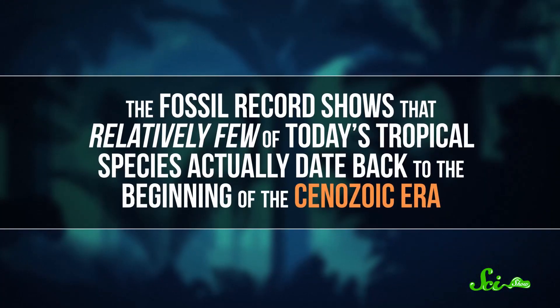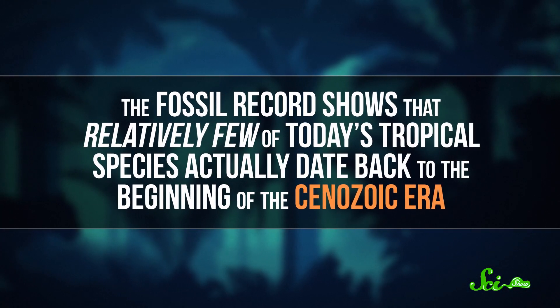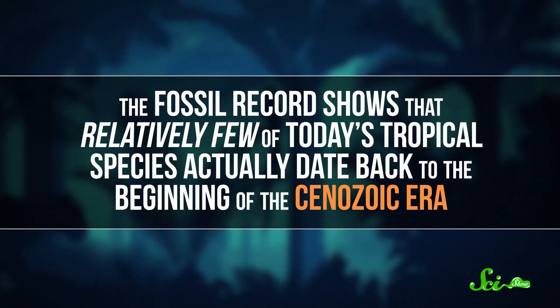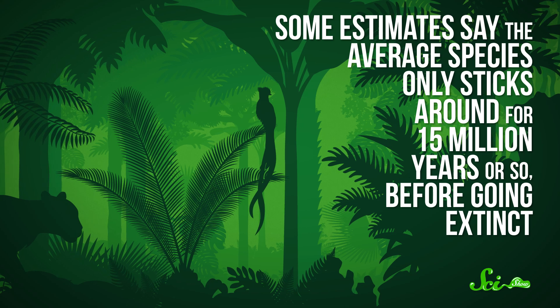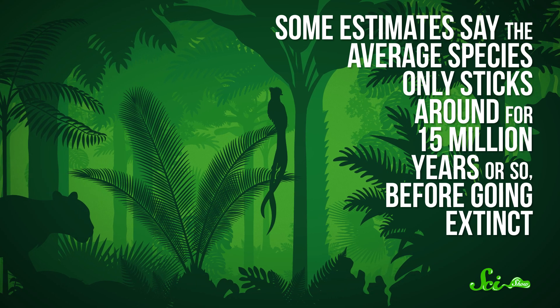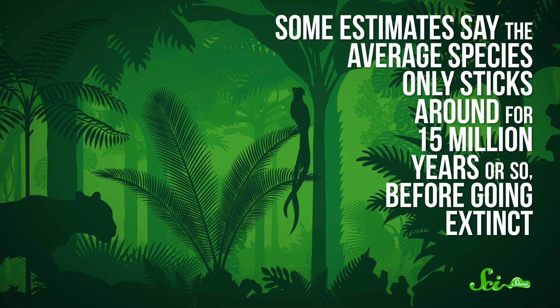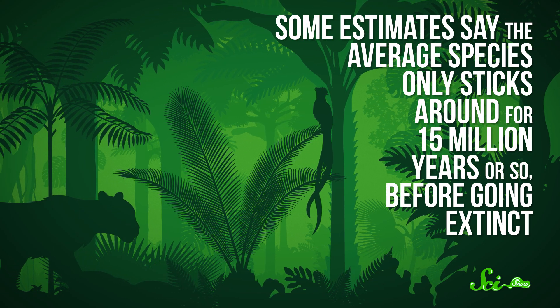But there are problems with this idea, too. For instance, the fossil record shows that relatively few of today's tropical species actually date back to the beginning of the Cenozoic era. Even in the tropics, some estimates say the average species only sticks around for about 15 million years or so before going extinct. So the latitudinal diversity gradient can't just be the result of tropical ecosystems being stable for a long time. Something else must be going on, too.